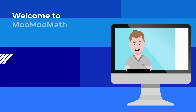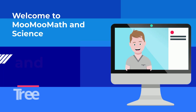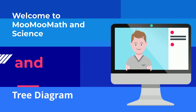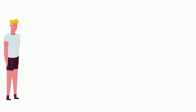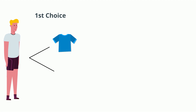Welcome to MooMath and Science and the Tree Diagram. A tree diagram can tell you the total number of outcomes and also the probability of certain choices. So let's get back to John. His first choice is this: blue shirt or the black shirt with the heart? And you can see how you set up the tree diagram.